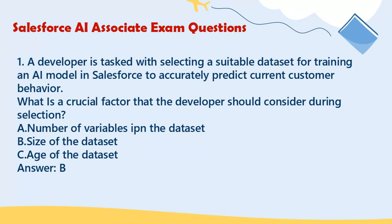Question 1: A developer is tasked with selecting a suitable dataset for training an AI model in Salesforce to accurately predict current customer behavior. What is a crucial factor that the developer should consider during selection? A. Number of variables in the dataset. B. Size of the dataset. C. Age of the dataset. Answer: B.